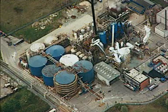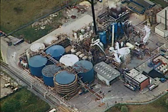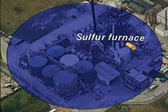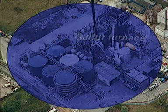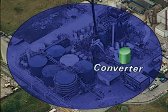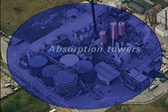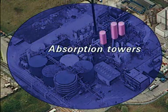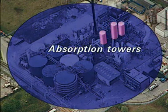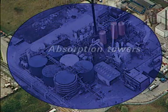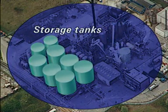At this small plant that makes 600 tonnes of acid per day, the sulphur is burnt in a furnace. Sulphur dioxide passes to the converter. Sulphur trioxide is fed to the absorption towers to produce acid of the required concentration, which is then stored for delivery by tanker.